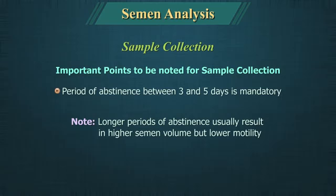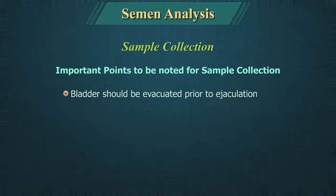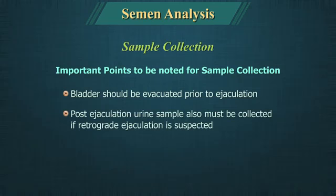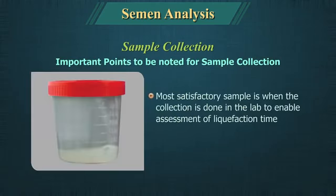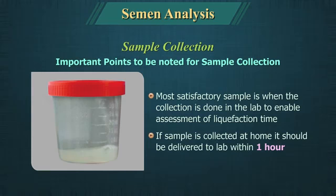Longer periods of abstinence usually result in higher semen volume but lower motility. The bladder should be evacuated prior to ejaculation. A post-ejaculation urine sample must also be collected if retrograde ejaculation is suspected. The most satisfactory sample is when collection is done in the lab to enable assessment of liquefaction time. If collected at home, it should be delivered to the lab within 1 hour.